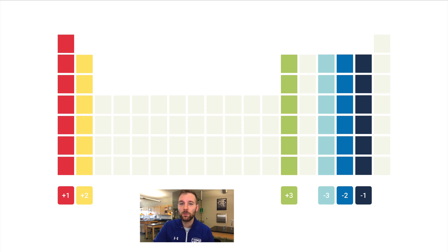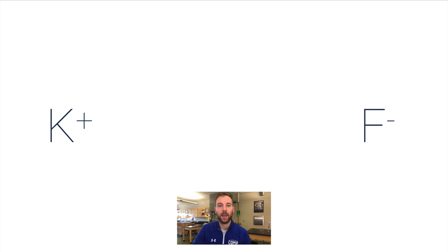Let's do some real life examples. I've got K with a plus one charge and F with a minus one charge. This was like our very first color example. I've got plus one and minus one, I just need one of each in order for these to be overall neutral.